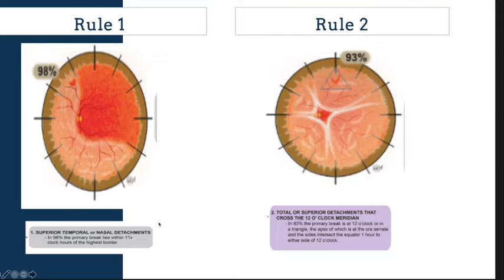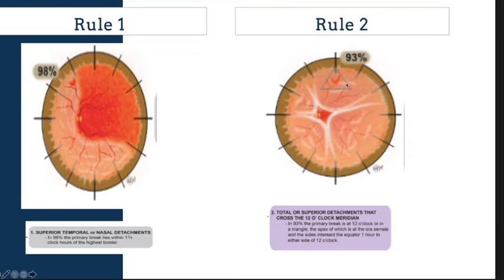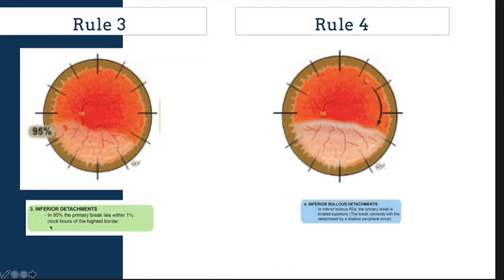Rule one states that when you have a retinal detachment that is either nasal or temporal, the tear is most likely located within one clock hour of the highest border. So the first thing to do when you see corrugated retina is to find the highest border of the detachment — in 98% of cases you will find the tear there. Rule two says that if you have a bullous superior detachment crossing the midline, look for the tear at the 12 o'clock position or within one and a half clock hours superiorly. Rule three says if you have an inferior detachment, look at the higher border and you will find the tear there.